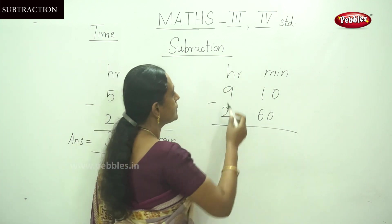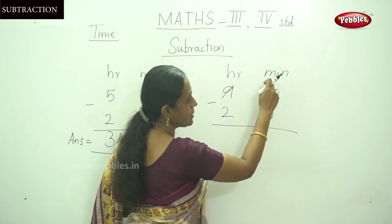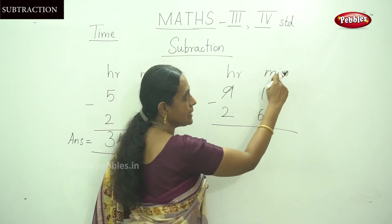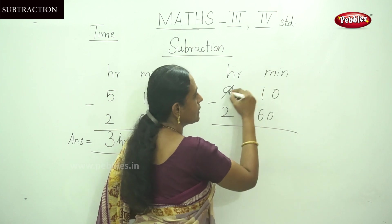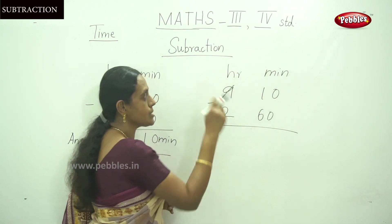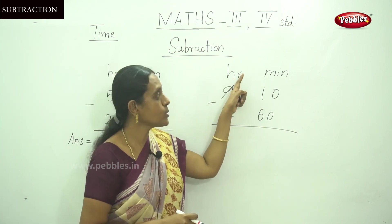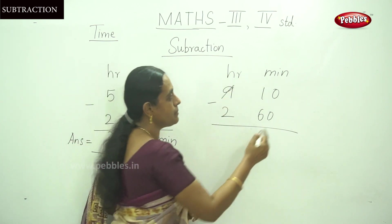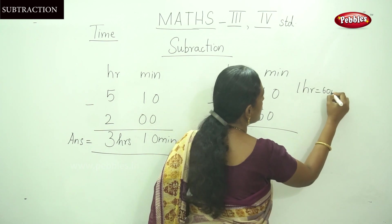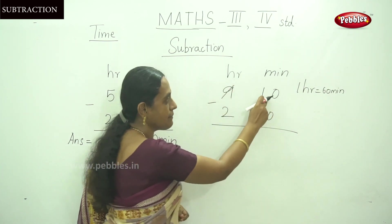Give 60 minutes to this. That means 1 hour equals 60 minutes. So 60 plus 10 is 70. You borrow 1 hour from the hours column. 1 hour is equal to 60 minutes, and 60 plus 10 is 70.